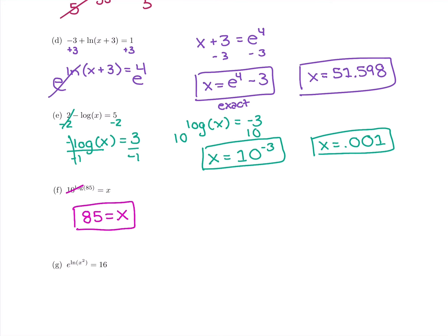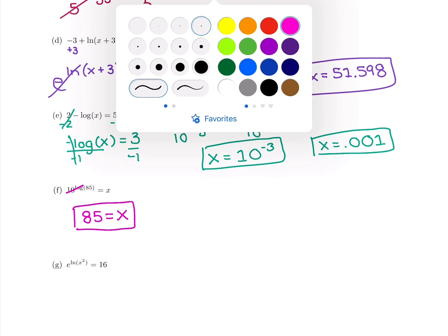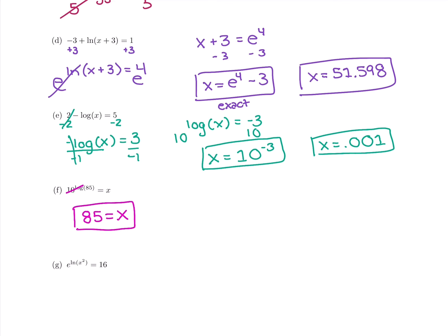Try to use that solution to look at the next one. It's the same concept. You have e to the ln. Those cancel each other out. So you get x squared equals 16.